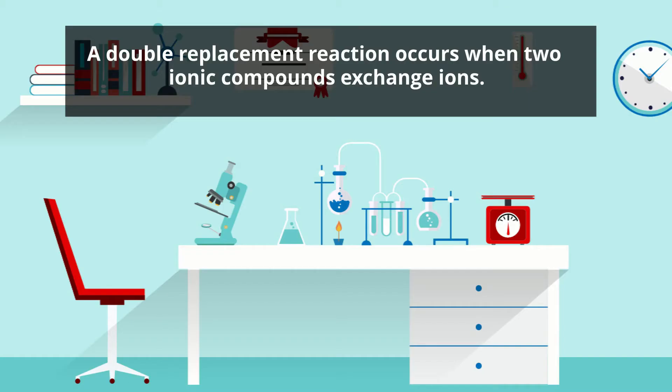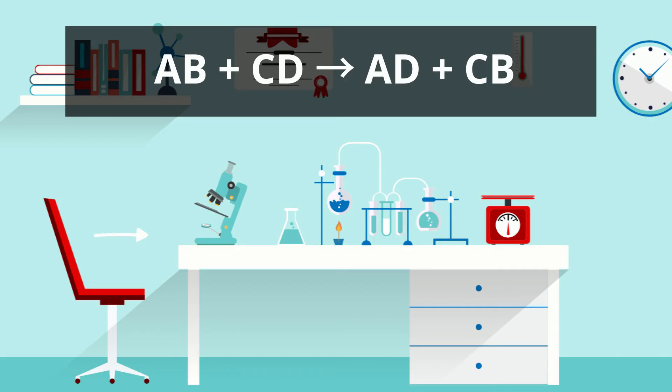A double replacement reaction occurs when two ionic compounds exchange ions. This produces two new ionic compounds. A double replacement reaction follows this equation: AB plus CD yields AD plus CB. AB and CD are the two reactant compounds, and AD and CB are the two product compounds that result from the reaction.